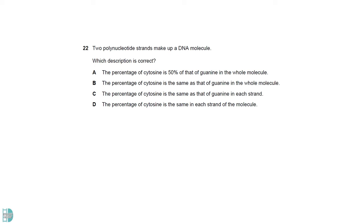Due to complementary base pairing, a DNA molecule's percentage of C and G should be equal. That makes A wrong and B the correct answer. C is incorrect, as it says the percentage is the same in just one strand. D is not true, as the percentage of C in one strand wouldn't be the same as the opposite strand.